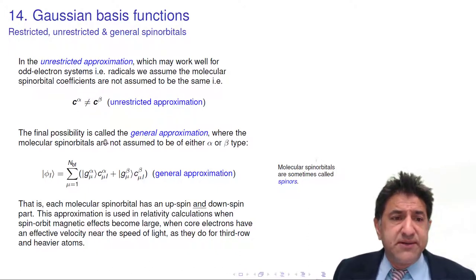And there's a third approximation where the orbitals are neither alpha nor beta. The final possibility is called the general approximation, where the molecular spin orbitals are not assumed to be of either alpha or beta type. So here's a molecular spin orbital. Notice there's no alpha or beta on the top of it. That's because it's made up of a sum of g alpha spin basis functions times c^alpha, times g beta times c^beta. And these two are not the same. And there is a c^alpha and a c^beta for every spin orbital.